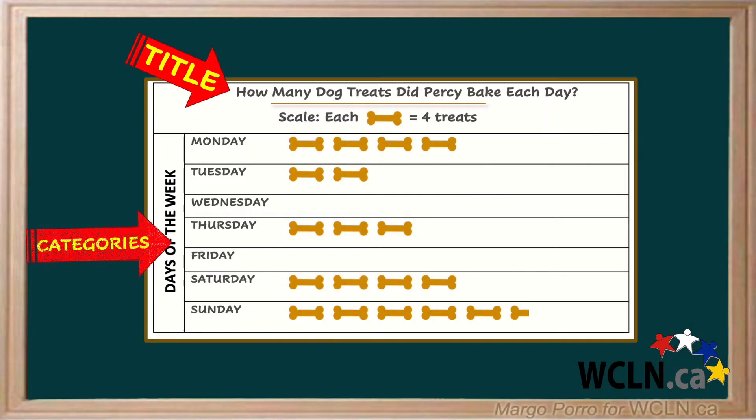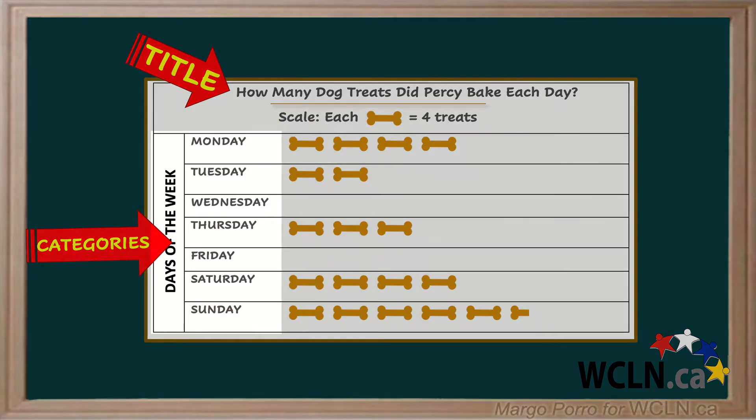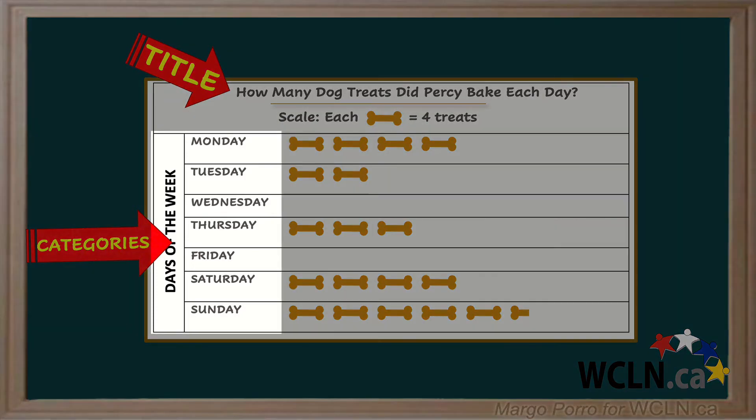The categories tell you the specific type of data. In this pictograph, the data is based on the days of the week. Those are the categories.